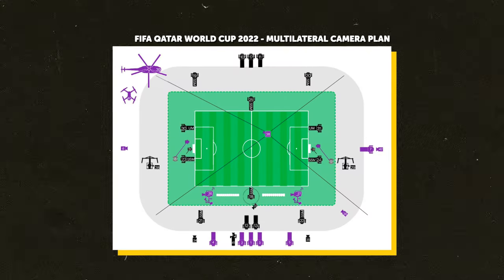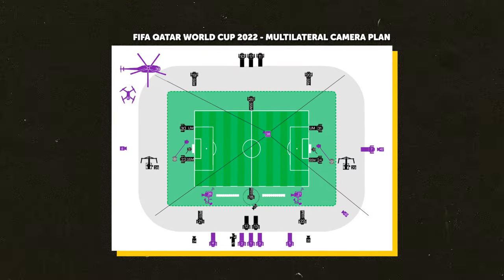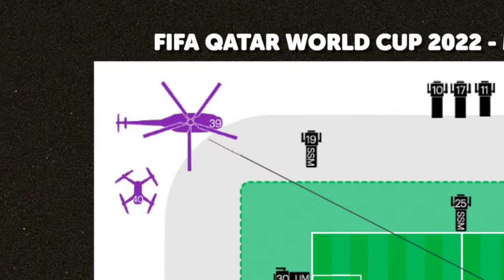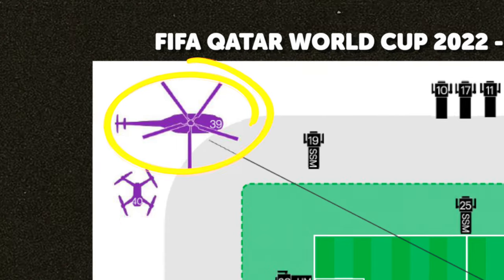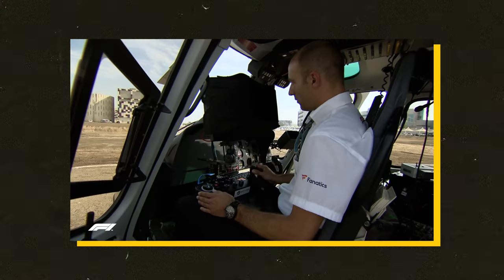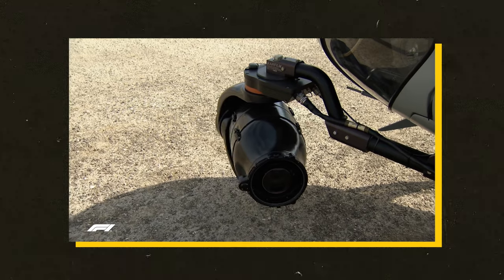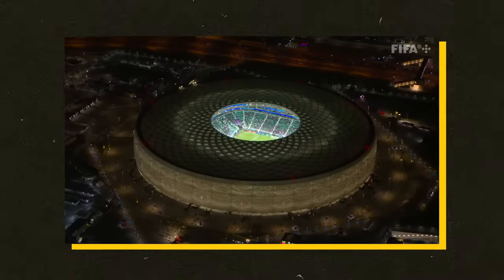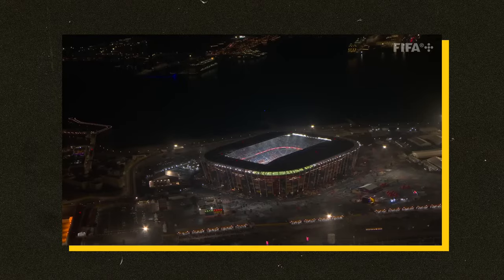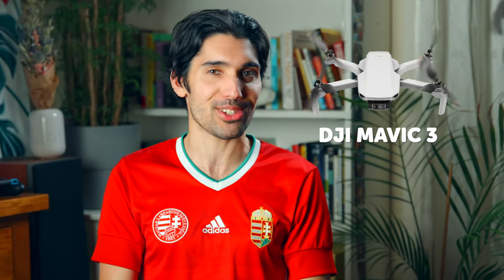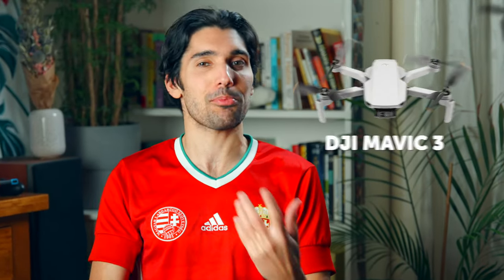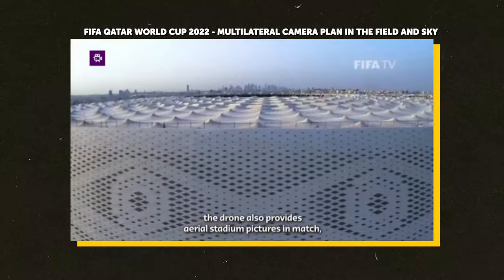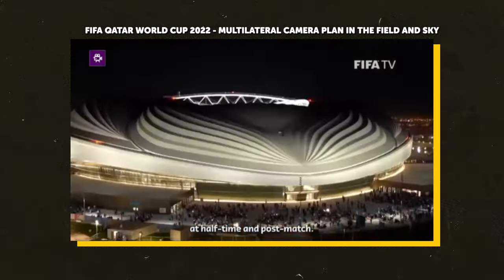Here's the match coverage plan for the 2022 Qatar World Cup. There are two aerial cameras including a heli cam and a drone. The heli cam is essentially a camera system that sits within a stabilized head on the outside of a helicopter, used to capture establishing shots of the stadiums before the match. Alongside it is a drone that captures more of the stadium's atmosphere during halftime and after the game.